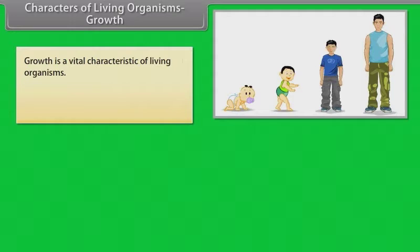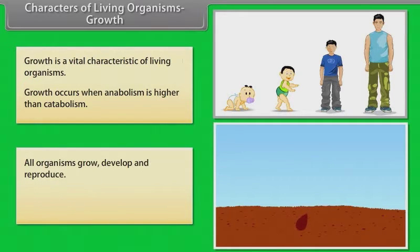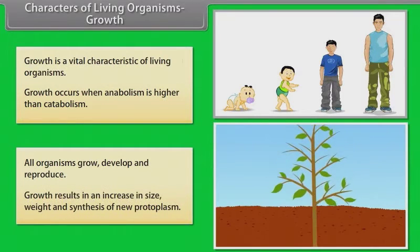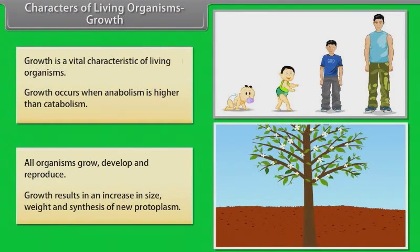Characters of living organisms - Growth: Growth is a vital characteristic of living organisms. Growth occurs when anabolism is higher than catabolism. All organisms grow, develop, and reproduce. Growth results in an increase in size, weight, and synthesis of new protoplasm.